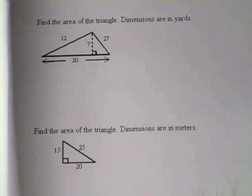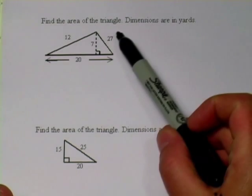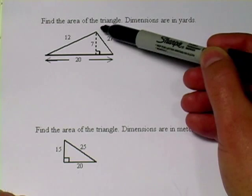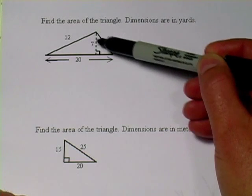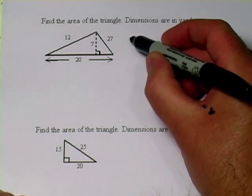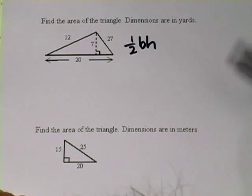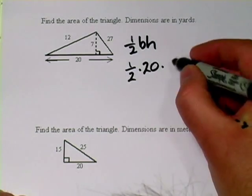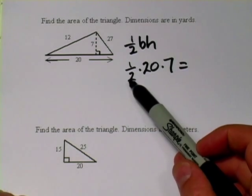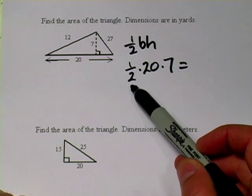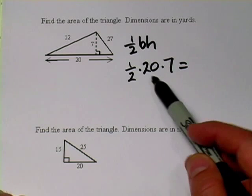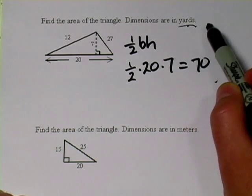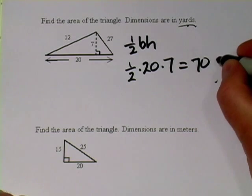Let's look at a couple of problems. The first one says find the area of the triangle; dimensions are in yards. It gives you a diagram with a base of 20 and a height shown by a dashed line dropped from the top vertex down to the base of 7. So we've got our formula: one-half times base times height. We plug in one-half times 20 times 7. You can type 0.5 times 20 times 7 in your calculator, or since multiplying by one-half is the same as dividing by 2, you could type 20 times 7 divided by 2. Either way you're going to get 70. And since we're doing area, the units are square yards.